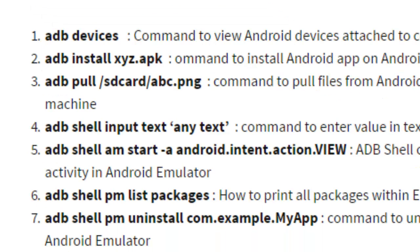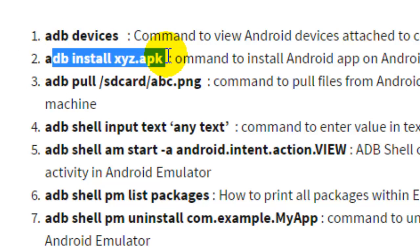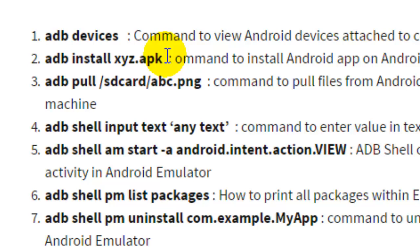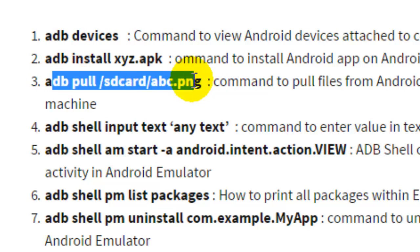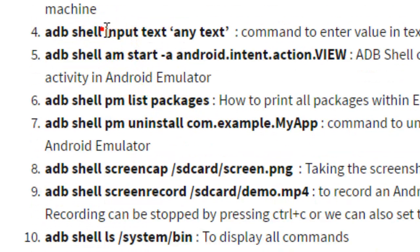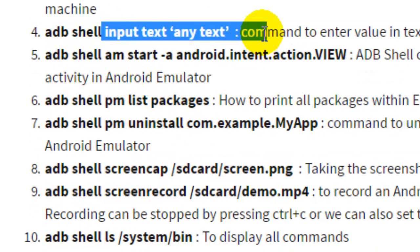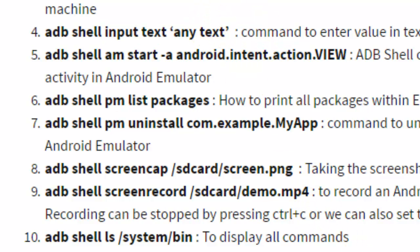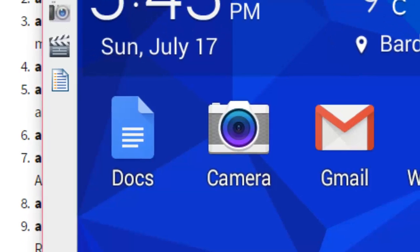The next command is `adb install` followed by the APK file name — this is used to install an Android application. Then `adb pull` followed by the file name downloads a file from the Android device to your local computer. Then `adb shell input text` is the command to enter a value into a text box. Let me show you how to do that.